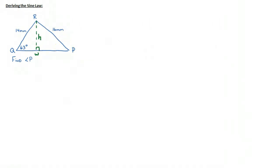So therefore, if I look at 63 degrees as my reference angle, I know that H is the opposite and 14 millimeters is hypotenuse. So that means that sine of 63 degrees is equal to the opposite, which is H over 14.